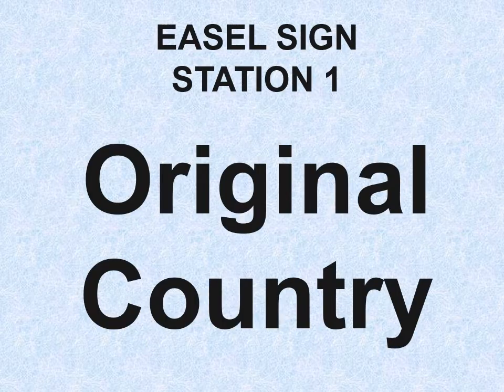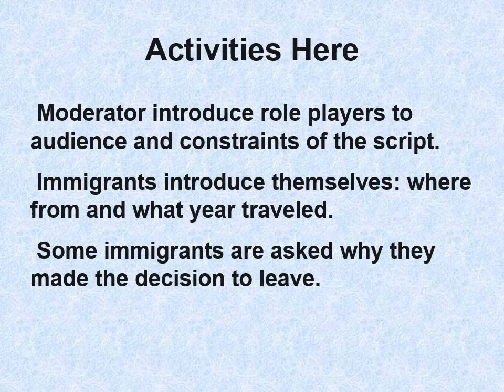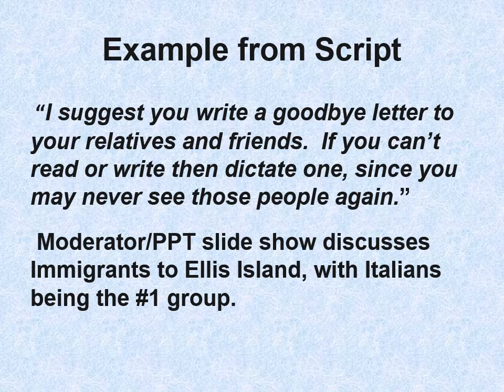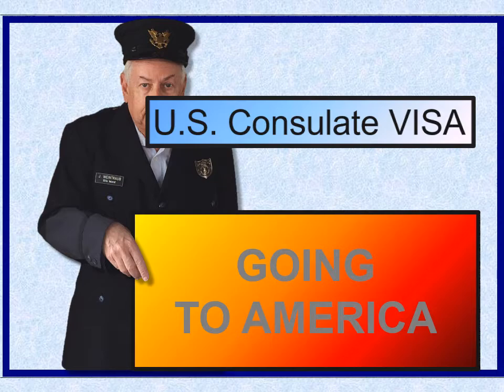I use an easel with signs. As moderator I introduced the role players and constraints. The immigrants then introduce themselves — where they're from and what year — and some are asked why they made the decision to leave: economics, a husband already in the U.S., oppression in the native land. I suggest they write a goodbye letter to their relatives and friends — or dictate one if they can't read or write — since they may never see these people again. This was a major decision.